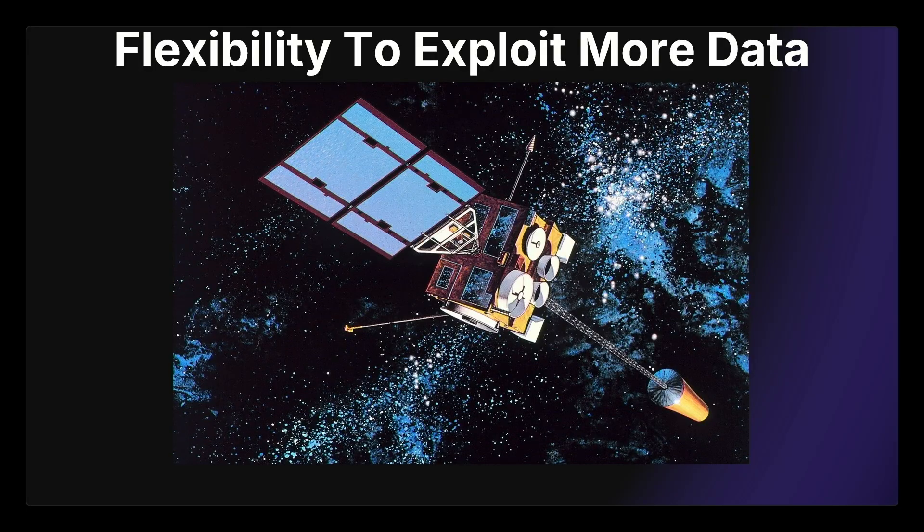That has deep implications because physics-based models are brittle — they have limitations. You have to make approximations about processes like unresolved clouds that are subgrid, and those approximations are imperfect. They create a barrier to using data, so it's hard to assimilate direct observations of clouds from space into numerical models because of these assumptions. When you remove the physical assumptions, things become much more flexible, and the ability to use many more data streams increases. And that's game-changing.